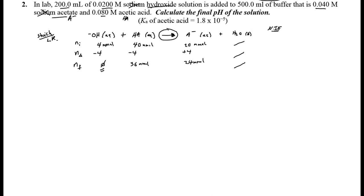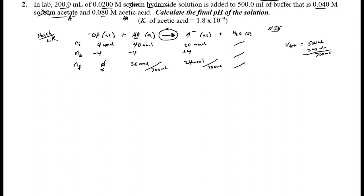The strong base is gone — it's reacted away. Now we determine the new equilibrium system from what's left: weak acid and conjugate base. We need to convert moles back to molarity. The total volume is the buffer (500 mL) plus the added base (200 mL) = 700 mL total. Check that total volume carefully — adding things together changes your concentrations.